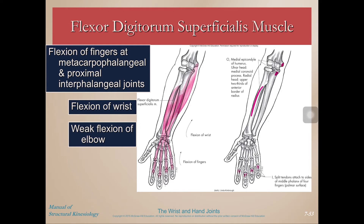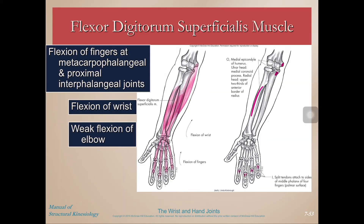Flexor digitorum superficialis — remember there's also a profundus which is deep to this. This flexes the fingers. Looking from an anterior aspect, it runs on the anterior aspect of your wrist, up your palm, and then flexes the fingers. It flexes the wrist and the fingers, and also contributes to elbow flexion.